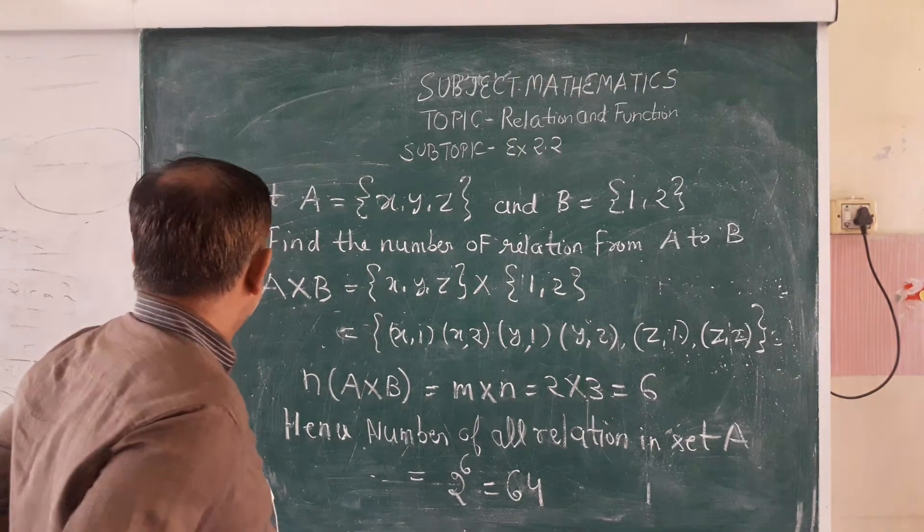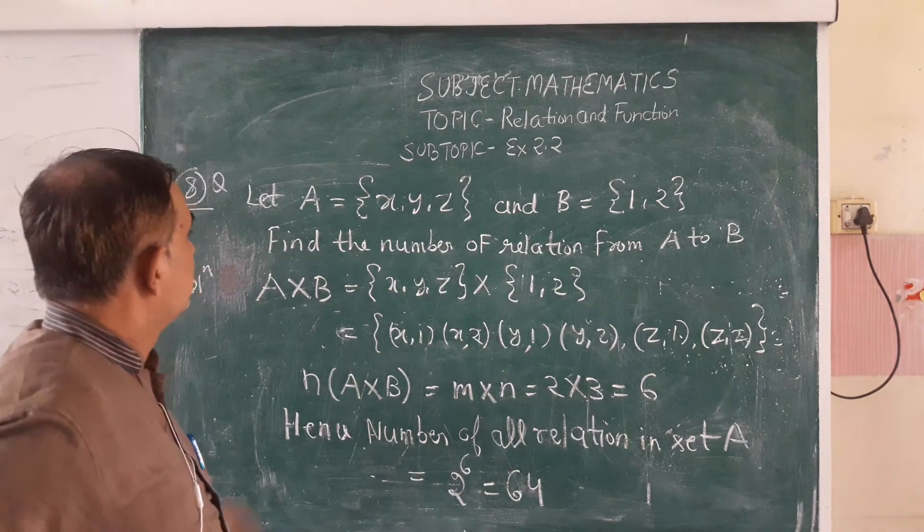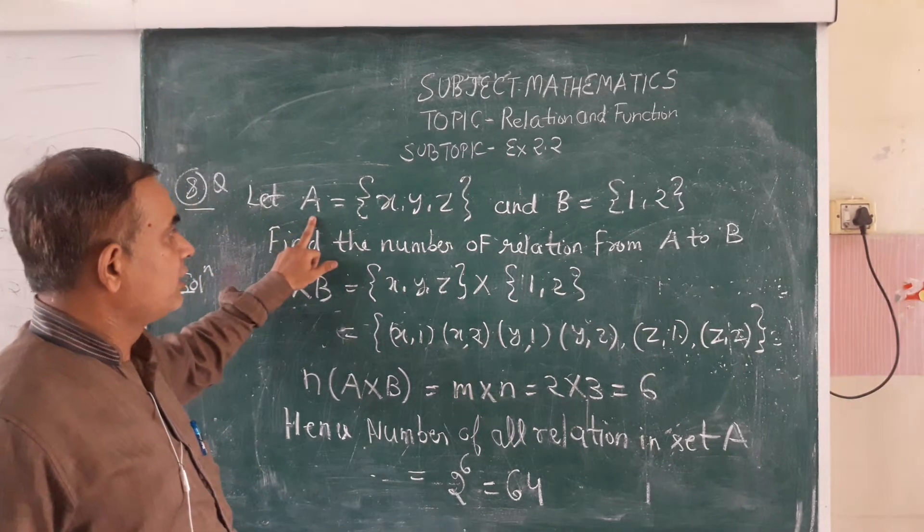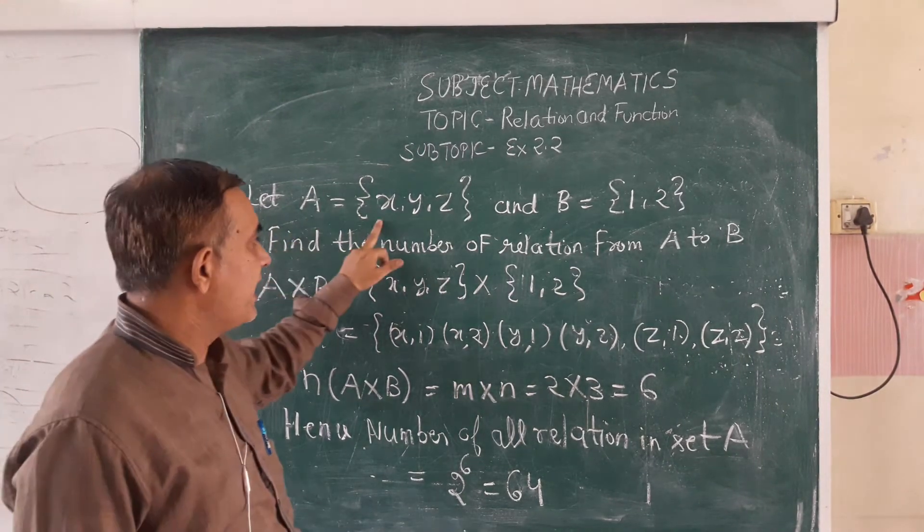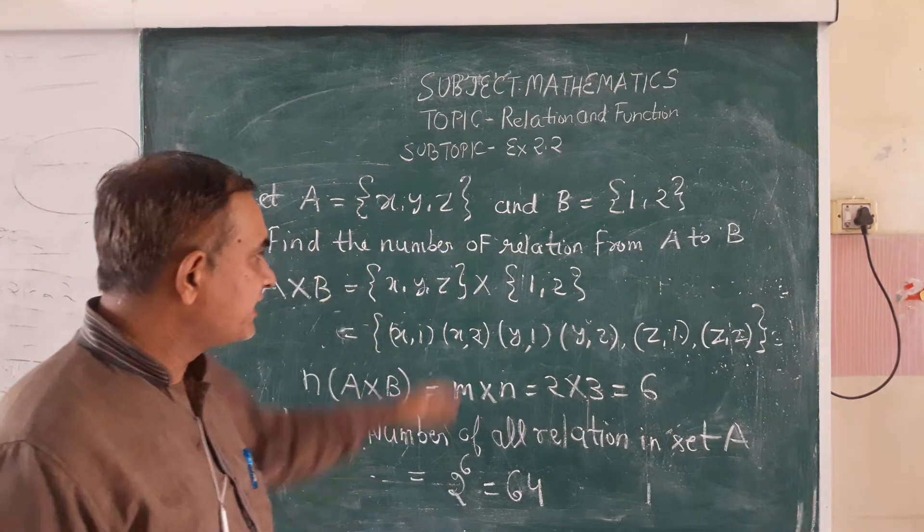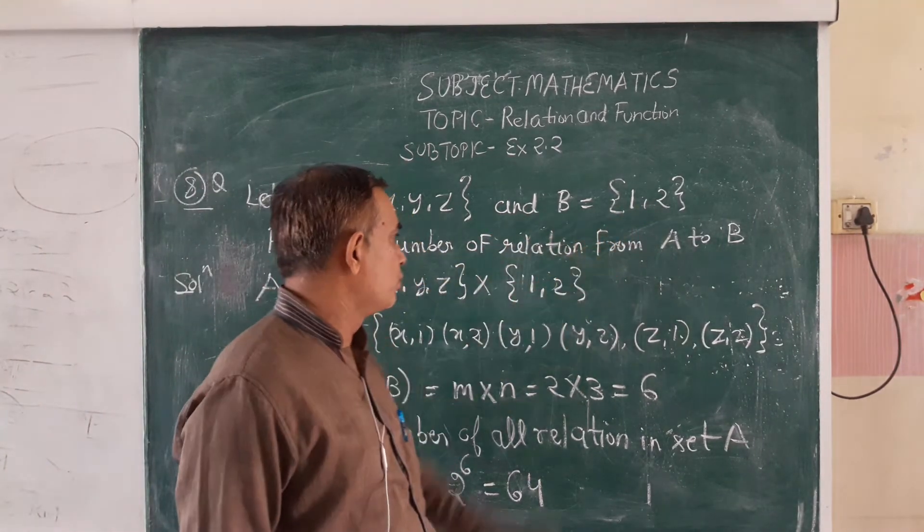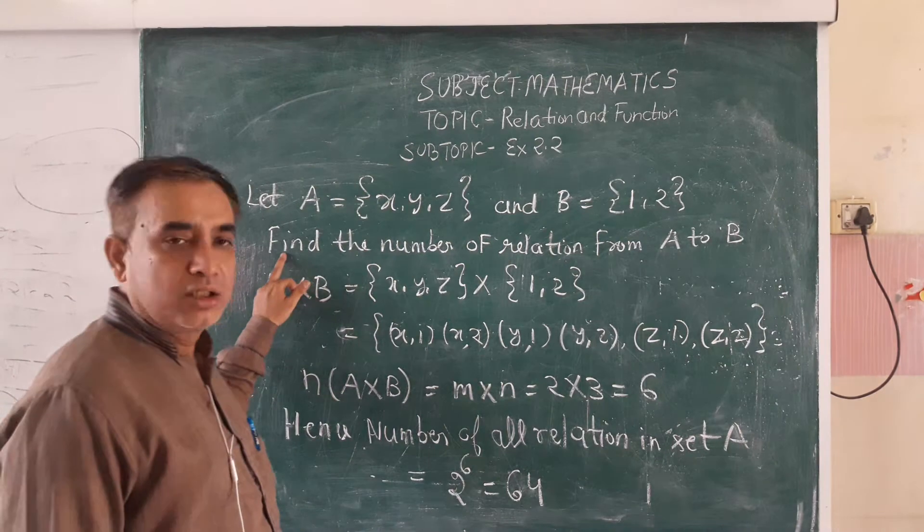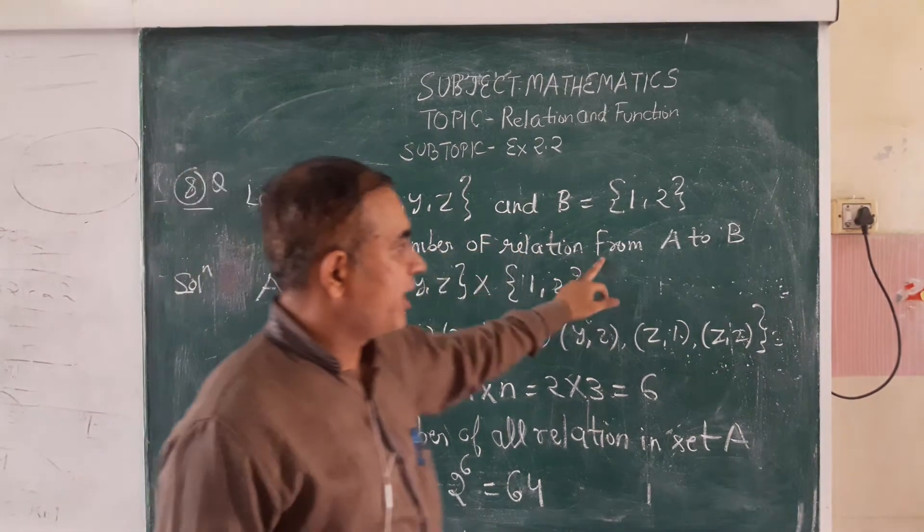Mungal Maitri students, now take question number 8. Here set A is given which contains 3 elements x, y, z and set B contains 2 elements 1 and 2. We have to find the number of relations from A to B.